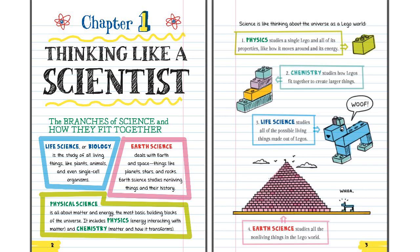Earth science deals with Earth and space, things like planets, stars, and rocks. Earth science studies non-living things and their history.